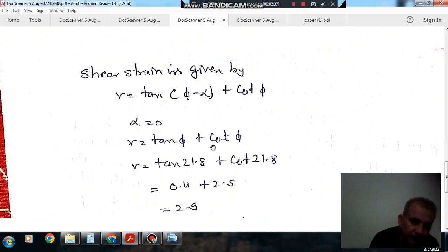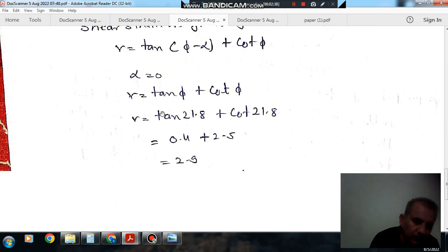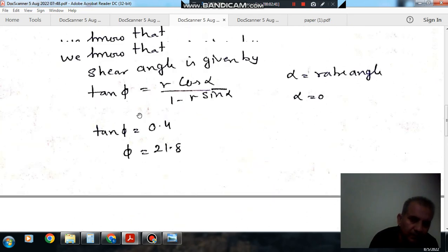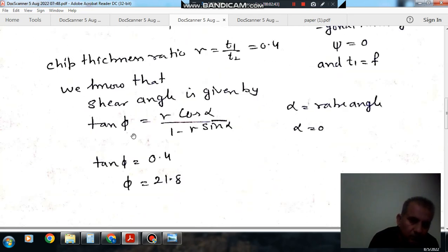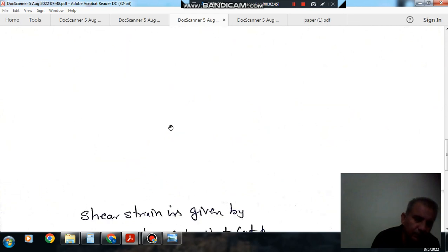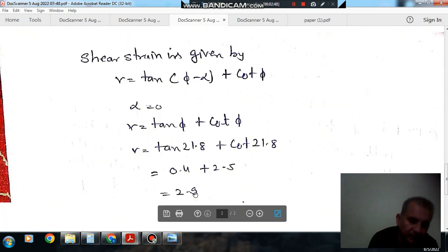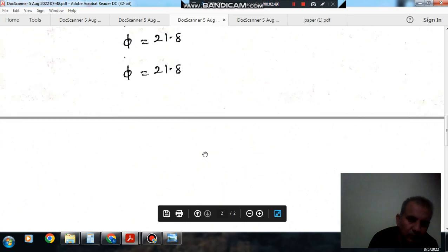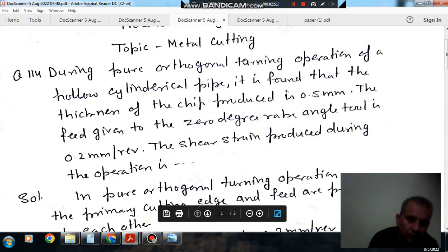Gamma will be your tangent phi plus cosecant phi. Phi is your shear plane angle. So that is 21.8. Putting your value we can see the answer is 2.9. So answer is 2.9.